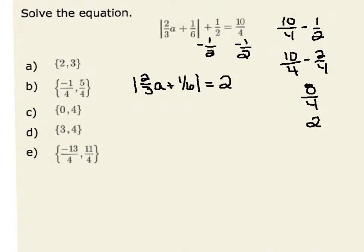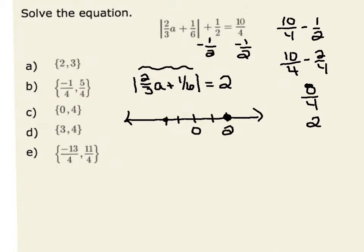Now let's investigate what we know about the absolute value. We can see this visually on a number line centered at 0. The absolute value is a distance away from 0. Therefore, when we want the absolute value of the quantity 2 thirds a plus 1 sixth to equal 2, the distance is exactly 2 units from 0. So either 2 thirds times a plus 1 sixth equals 2, or it equals negative 2.